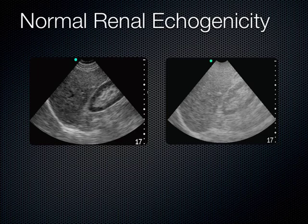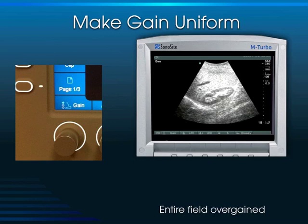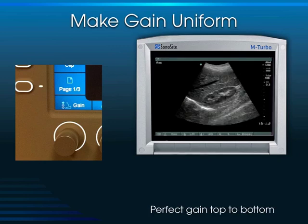As novices, we tend to over-gain the machine to see better, and in brightly lit rooms the tendency is to turn up the gain. Look what happens — you can wash out the image, making it really difficult to see how the cortex of the kidney is less echogenic than the liver. To adjust gain on the Sonocyte S device, turn the rotary knob counterclockwise. Bringing the gain down gives you a nice level where you can clearly see the cortex is less echogenic than the liver parenchyma.